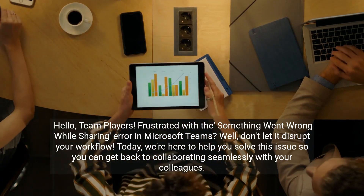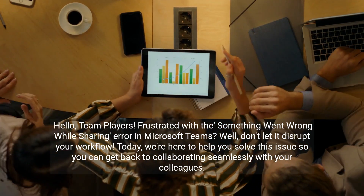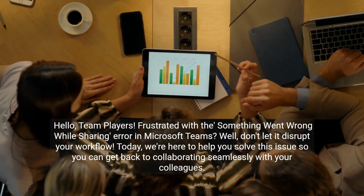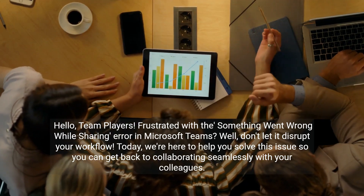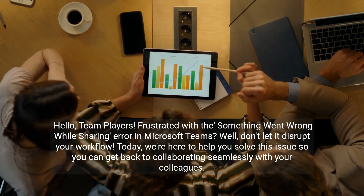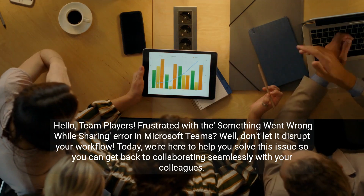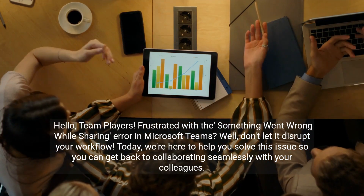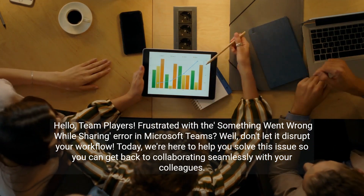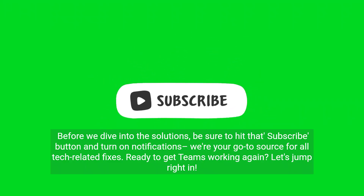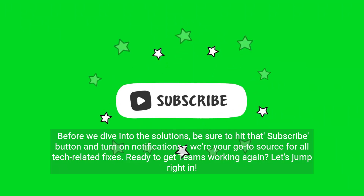Hello team players. Frustrated with the 'something went wrong while sharing' error in Microsoft Teams? Well, don't let it disrupt your workflow. Today, we're here to help you solve this issue so you can get back to collaborating seamlessly with your colleagues. Before we dive into the solutions, be sure to hit that subscribe button and turn on notifications — we're your go-to source for all tech-related fixes. Ready to get Teams working again? Let's jump right in.